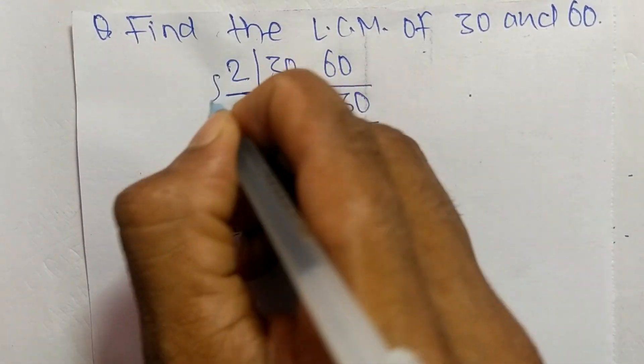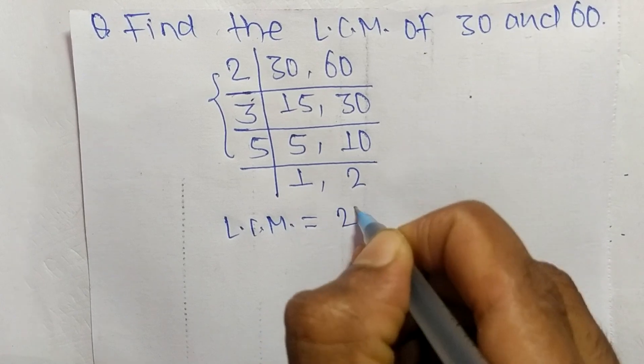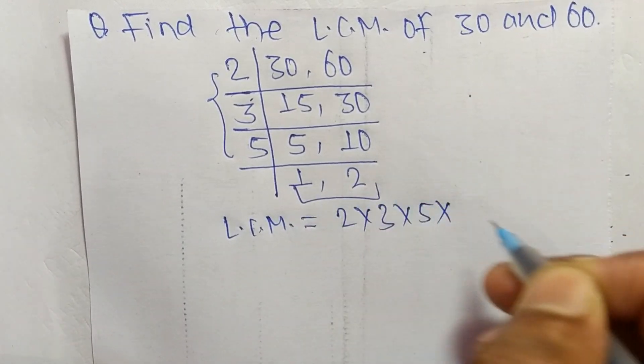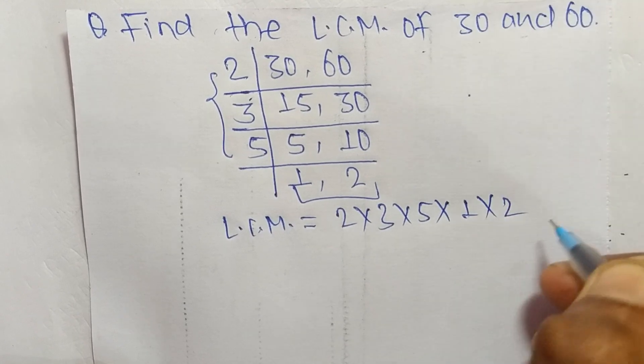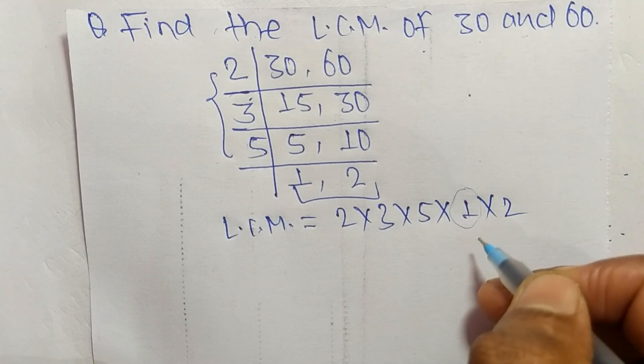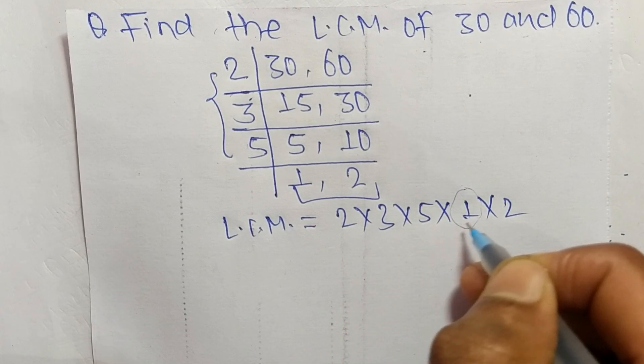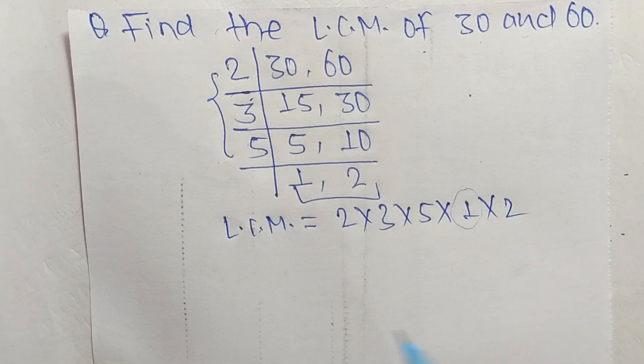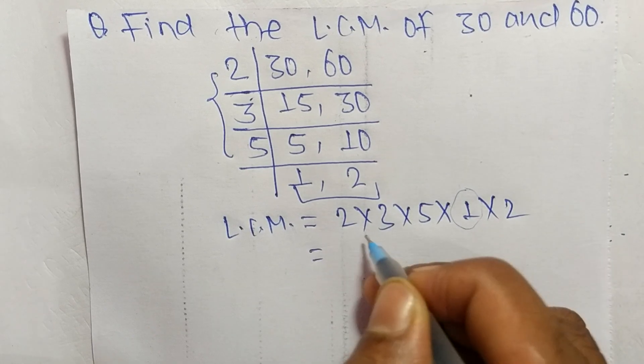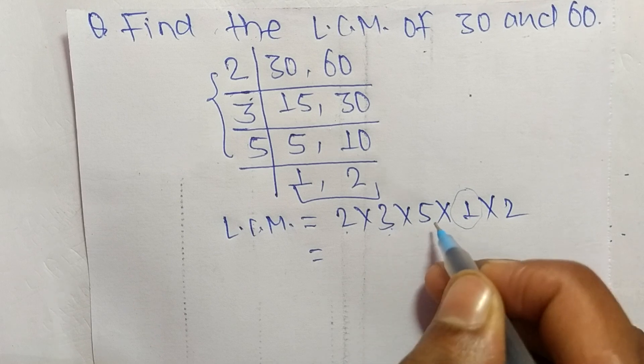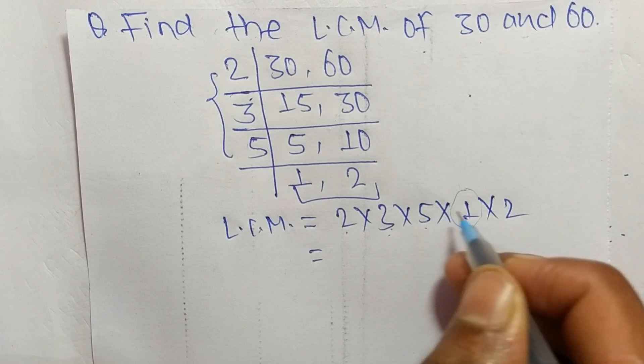We can neglect this 1 because multiplying any number by 1 gives the same result. So the LCM is 2 times 3 equals 6, 6 times 5 equals 30, 30 times 1 equals 30, 30 times 2 equals 60.